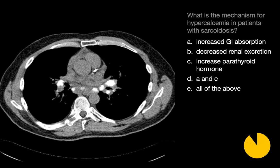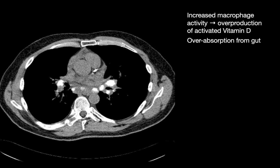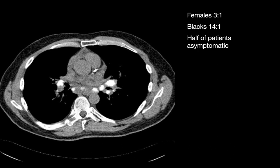What's the mechanism for hypercalcemia in patients with sarcoid? Most folks believe that increased macrophage activity results in the overproduction of activated vitamin D — macrophages play a role in that metabolic pathway — causing overabsorption of calcium from the gut. So the answer here is increased GI absorption. A few notes about sarcoid: female predominance three to one, Black predominance of 14 to one over others, and half of patients with sarcoid may be asymptomatic.